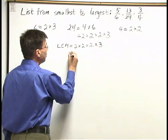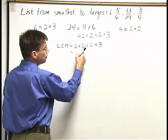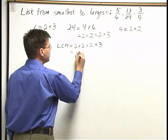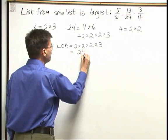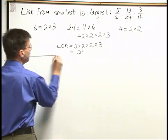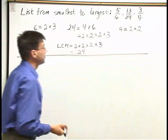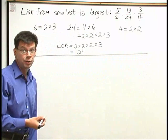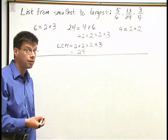Now let's multiply these together. 2 times 2 is 4, times 2 is 8, times 3 is 24. 24 is my LCM of these 3 fractions. And that's going to be the common denominator that we use in order to compare them to each other.